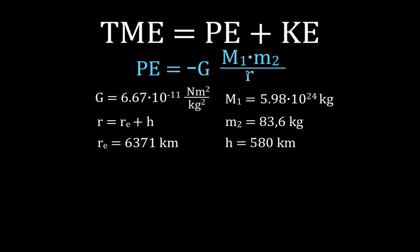Then we're going to divide that by the distance between the two objects. When we're using this equation, R stands for radius. The radius is the sum of two distances: the radius of the Earth, plus the height that the object is above the Earth's surface. Because R is actually the distance from the center of mass of the Earth — which is the center of the Earth — plus the height that Sputnik orbited above the Earth's surface. So we add those together to get R.